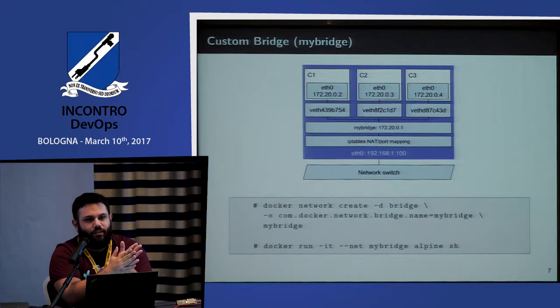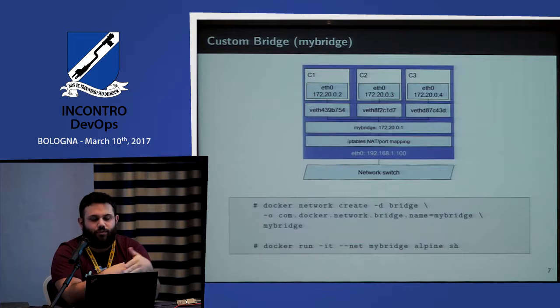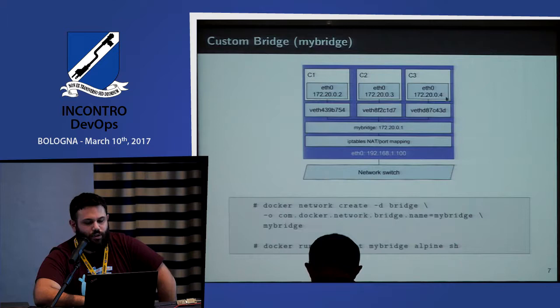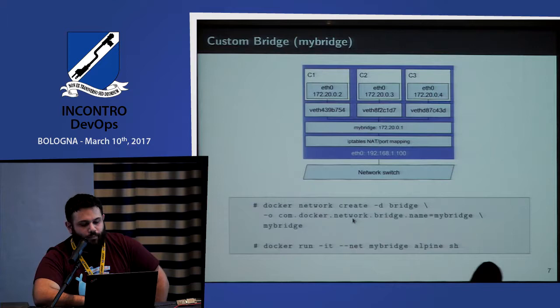The default bridge can be overwritten. If you need to isolate a group of containers on the same OS, you can just create your own bridge, or if you want a different IP class. This example takes the 172.20 class: 20.0.2, 20.0.3, and .4. It's the same as before — you've just overwritten it. You can also give the bridge a label to name it in the OS.